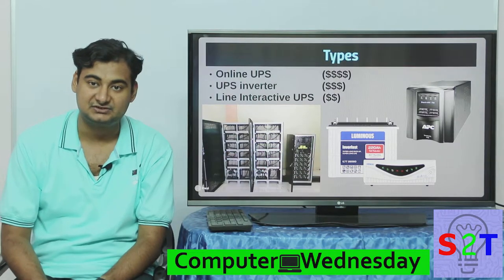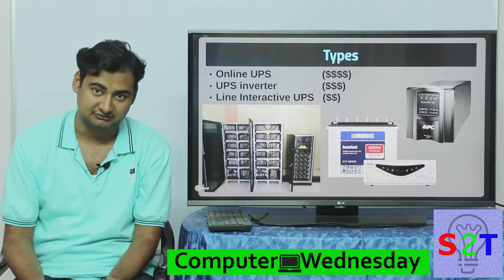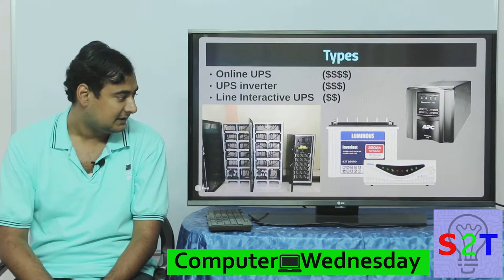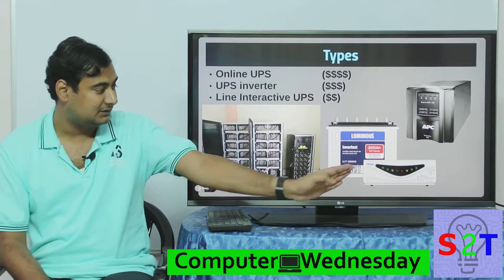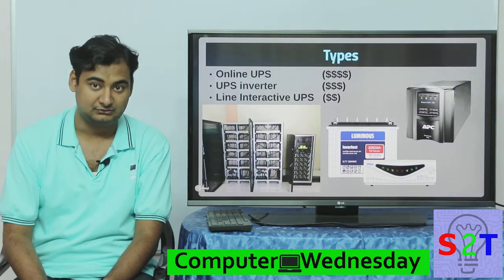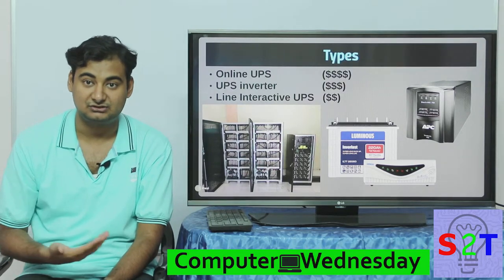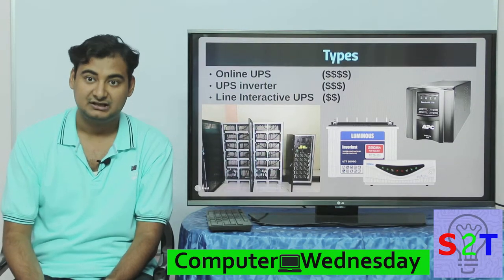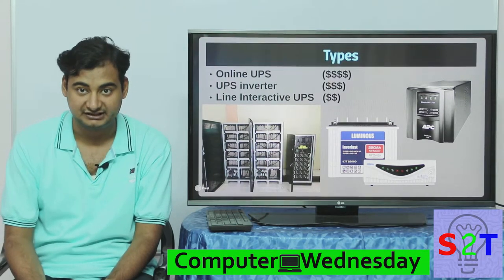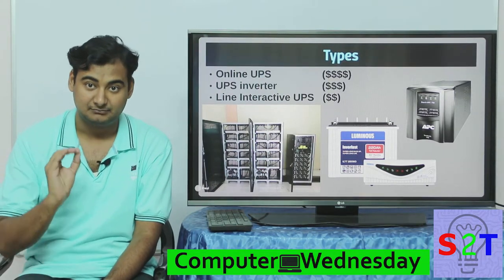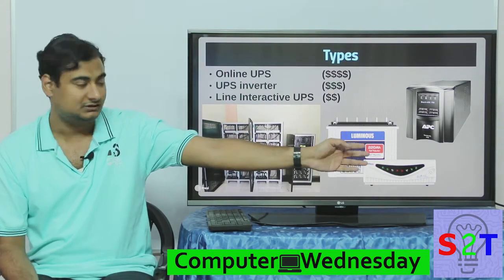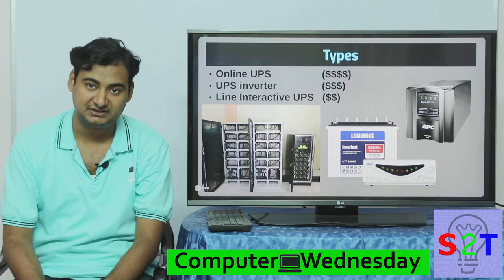Next is the UPS inverter, which is quite popular nowadays — especially in places with long power outages. If you're buying one of these, please make sure you buy a sine wave model. These are meant to run for hours, so you may be running your computer for one to two hours. High-end power supplies will flat-out shut down if they detect a square wave. So please buy sine wave if you're going to run it for extended periods.